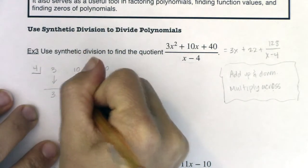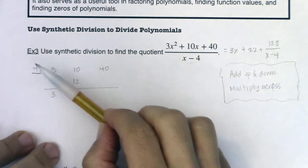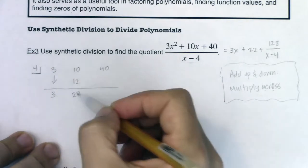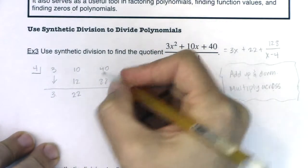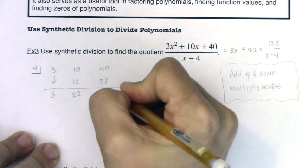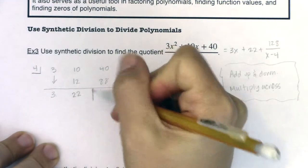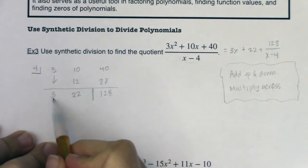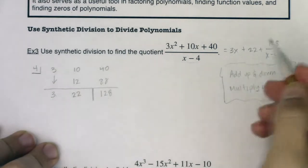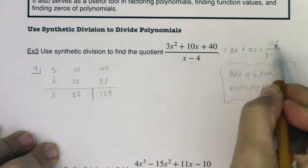And then the 22 has to get hooked onto the 4 and you see me crossing. So I would multiply across. Well, 4 times 22 is 88. The next thing I want to do is add up and down. So this is 128. And you can see, I usually block off that last number. You can see the 3, the 22 and the 128. And those correspond to the coefficients 3, 22 and 128.